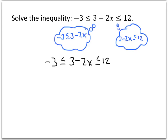Instead of subtracting 3 from both sides of each inequality separately, we're going to subtract 3 from all three numbers at once. In the middle, the 3 and the minus 3 cancel out, which is why we're subtracting 3 in the first place. On the left, minus 3 minus 3 gives us minus 6. In the middle we now have negative 2x, and on the right, 12 minus 3 is 9.